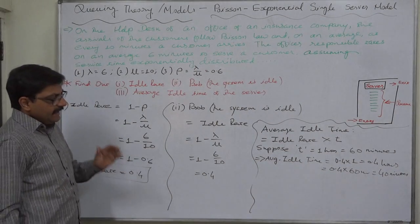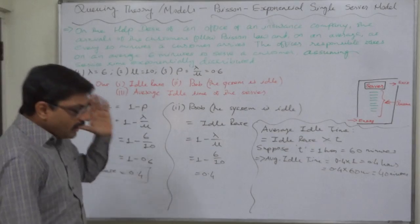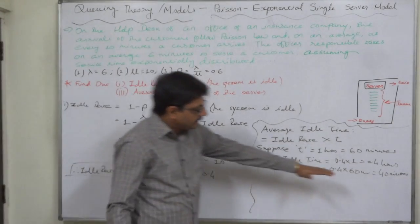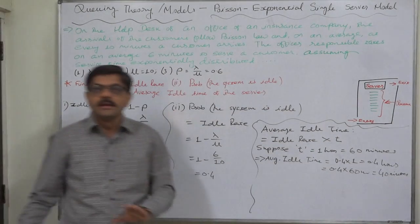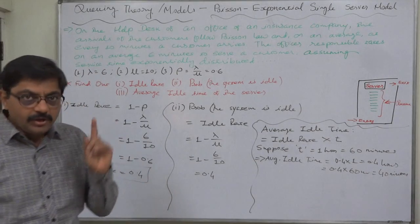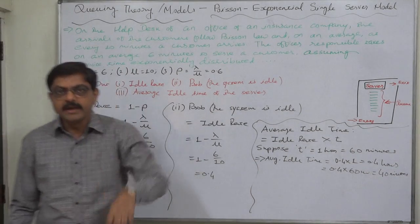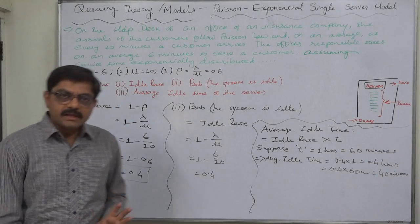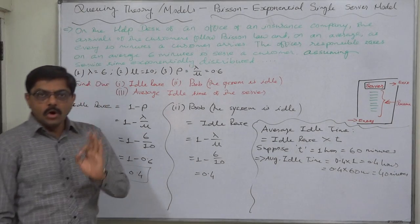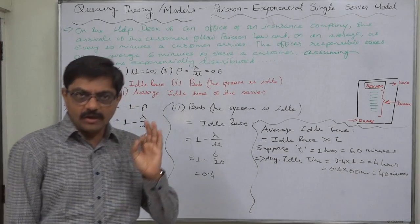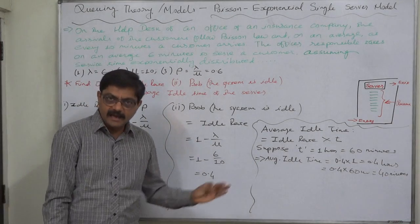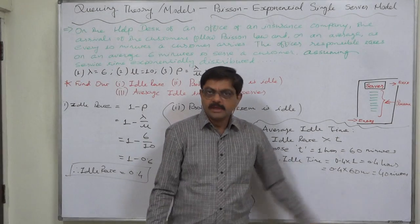So, in an hour, on average, 24 minutes the server will be idle. We don't mean first 24 minutes or last 24 minutes or in between 24 minutes, no. But, the summation of the minutes the server will be idle in an hour can be 24.